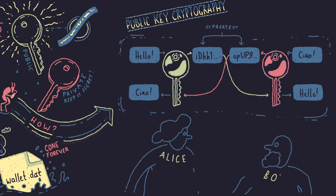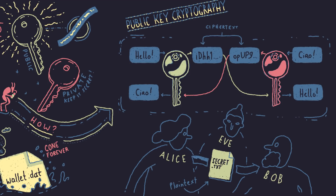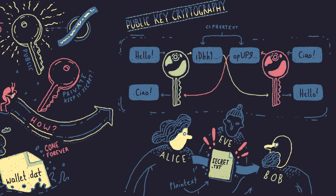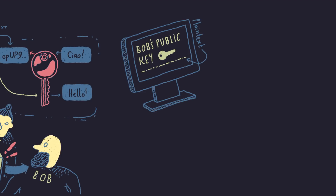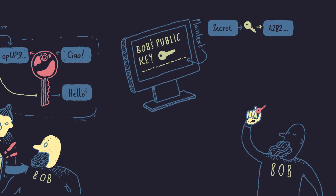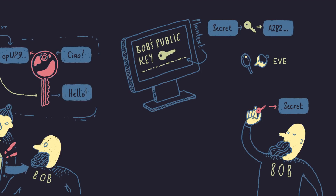Say Alice wants to send Bob some sensitive information in a way that guarantees no one else, such as Eve, can listen in and read the information while it's on its way. If Alice sends unencrypted data — also known as plain text data — and if Eve successfully intercepts the message, she can read it. The sensitive information would no longer be a secret between Alice and Bob. Here's how Alice and Bob solve the problem using public key cryptography. First, Bob publishes his public key online as plain text so that Alice can easily access it. Other people might see the public key too, but that doesn't matter. Then, Alice uses Bob's public key to encrypt the sensitive data before sending it to him. Since only Bob has access to the corresponding private key, that means only Bob can decrypt Alice's encrypted message. Even if Eve manages to intercept the data, she still won't be able to read it.